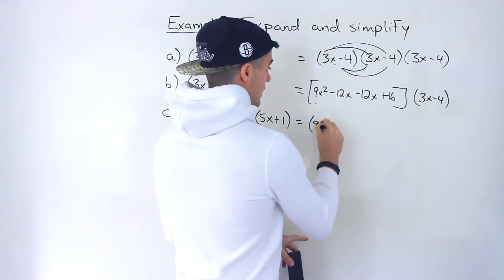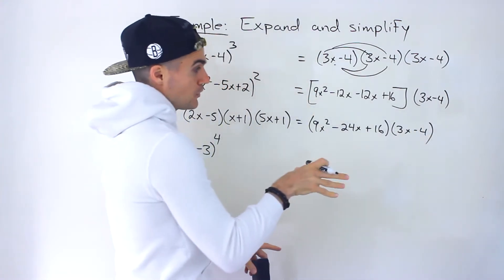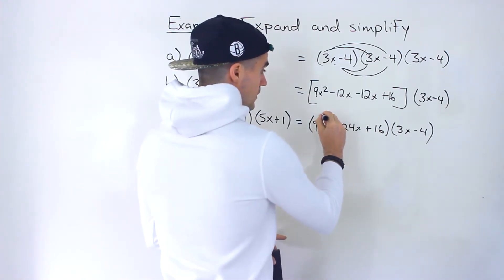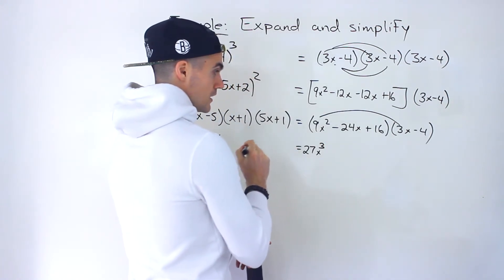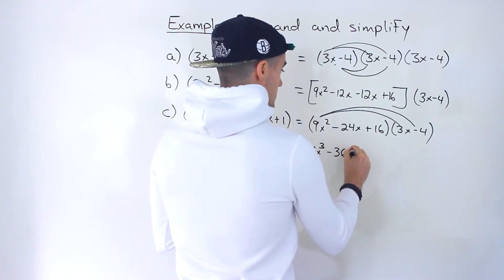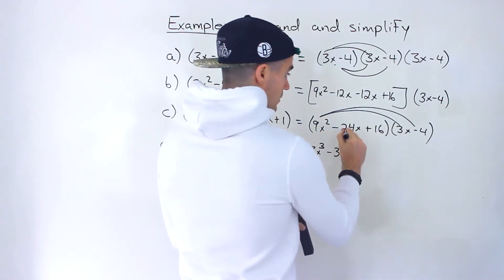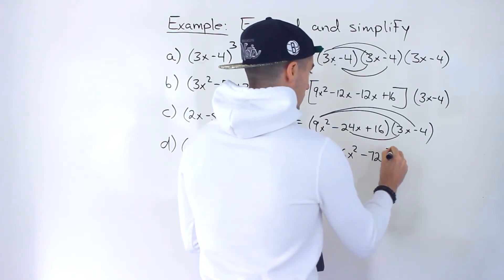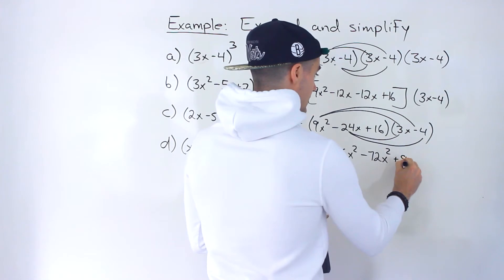Notice that negative 12x minus 12x gives us negative 24x plus 16, and then we've got the 3x minus 4. Now we multiply that bracket by this one — make sure all terms multiply by each other. 9x squared times 3x gives 27x cubed. 9x squared times negative 4 gives negative 36x squared. Then negative 24x times 3x gives negative 72x squared. Negative 24x times negative 4 gives positive 96x.